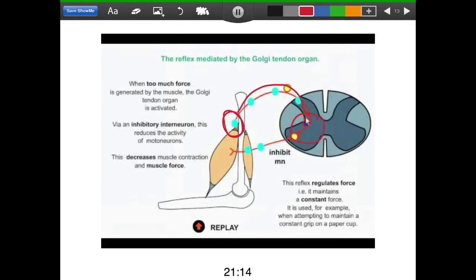And it's going to synapse with an inhibitory interneuron, just like the other reflex. That one is going to, in turn, decrease the firing rate of this alpha motor neuron right here. And basically, this is going to decrease the muscle contraction and the muscle force. So this reflex is useful for regulating the amount of force that we need, and it helps you maintain a constant force.